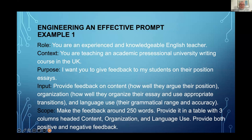Here's a prompt: 'You are an experienced and knowledgeable English teacher. You're teaching at an academic pre-sessional university course in the UK. I want you to give feedback to my students on their position essays.' The input is key — I want AI to provide feedback on content, organization, and language use, and I've explained what each of those is. Then I've given some scope: feedback around 250 words, provided in a table with three columns headed content, organization, and language use, with both positive and negative feedback. It's just not sufficient to ask AI simply 'give feedback.'